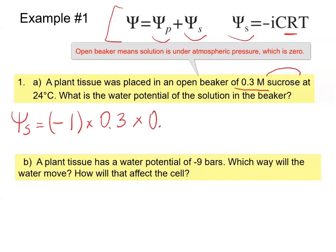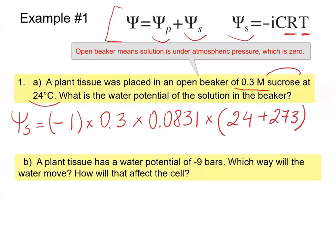We then multiply by the temperature in Kelvin, so we convert Celsius to Kelvin: 24 plus 273. Doing the math, we get a solute potential of negative 7.4 bars.